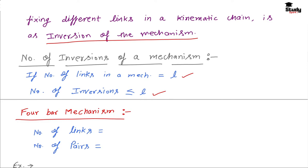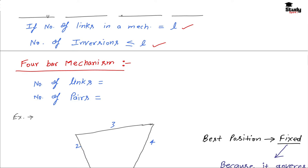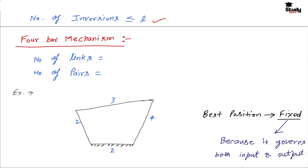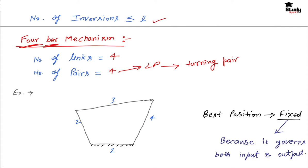Now we come to the four-bar mechanism. The minimum number of links to form a kinematic chain is 4, so the number of links in a four-bar mechanism is 4 and the number of pairs is also 4. In a four-bar mechanism, the total number of links equals 4 and the total number of turning pairs equals 4.